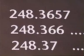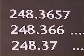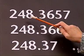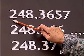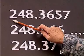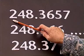If we need to approximate a number to a certain number of significant figures, the method used is similar to that used for approximating decimal places. The only difference is that we count from the most significant figure, which is the first digit.